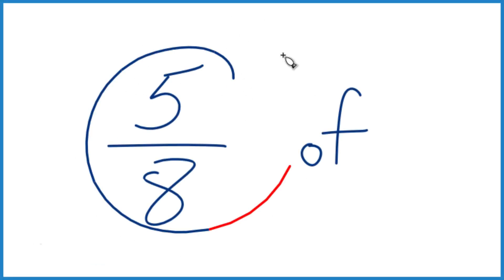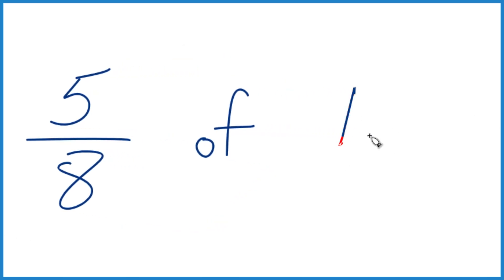Let's take a look at how you find 5 eighths of a number, and let's say 40. So we'll start out with 40. So how do you find 5 eighths of the number 40?